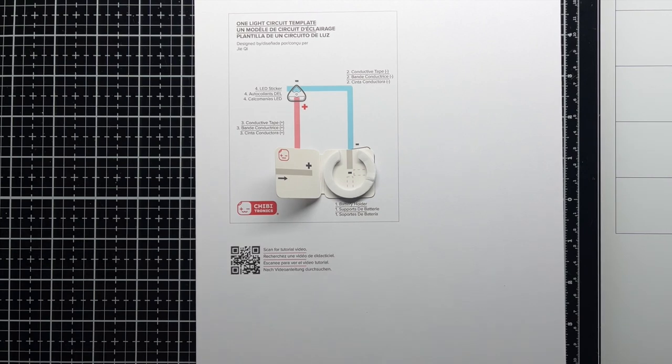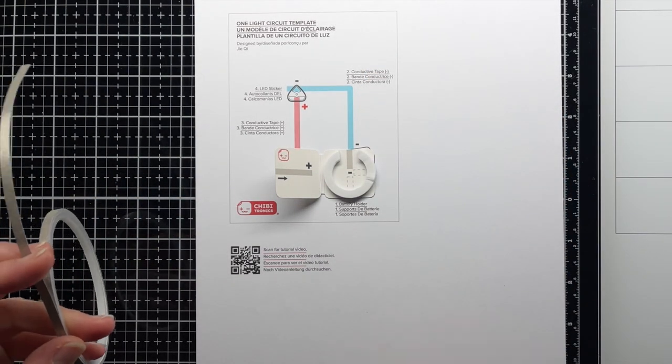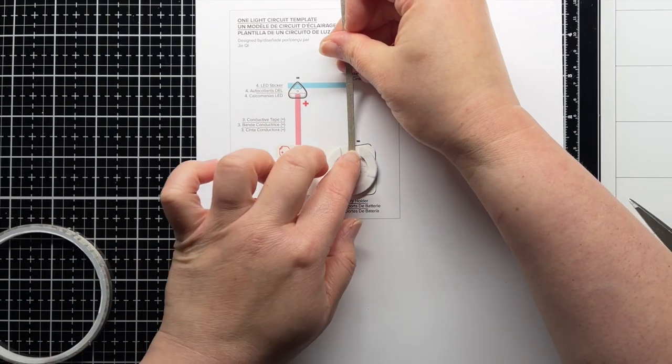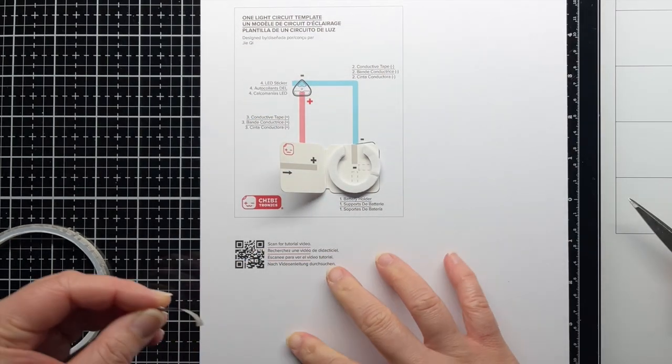For now, do not remove the adhesive backing from the top of the foam ring. Next, we'll apply our conductive fabric tape. The template has helpful colorful lines to show the red positive and blue negative lines of the circuit, but they're just a color reference, and you'll use the same tape for both lines.